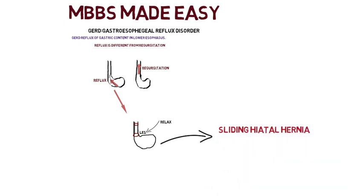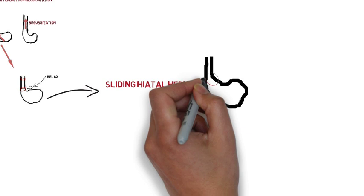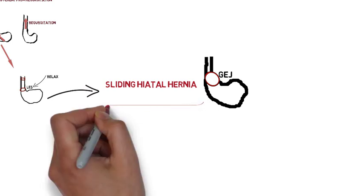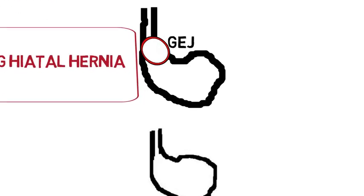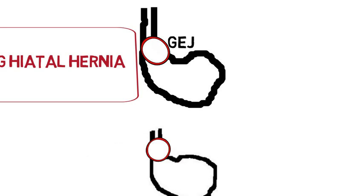Number one risk factor is sliding hiatal hernia. What happens in sliding hiatal hernia? See, this is the normal gastroesophageal junction, which is the junction between esophagus and stomach. What happens in sliding hiatal hernia is this gastroesophageal junction moves slightly up.